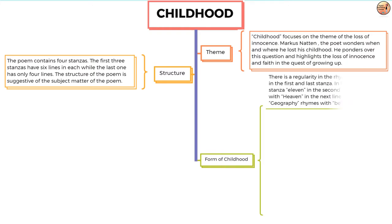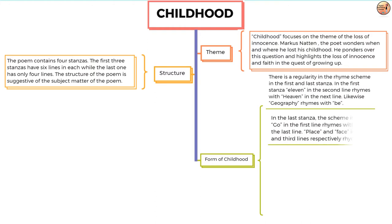There is a regularity in the rhyme scheme in the first and last stanza. In the first stanza, the word 'eleven' in the second line rhymes with the word 'heaven' in the next line. Likewise, 'geography' rhymes with 'be.' In the last stanza, the scheme is different — 'go' in the first line rhymes with 'no' in the last line, and 'place' and 'face' in the second and third lines rhyme together.